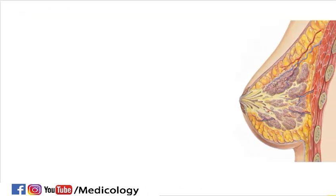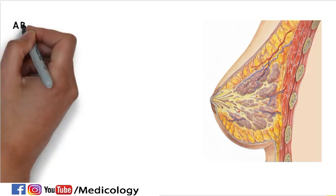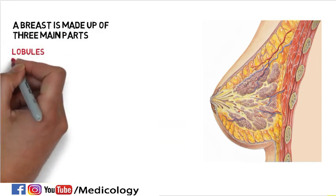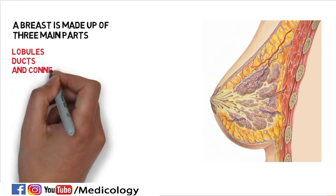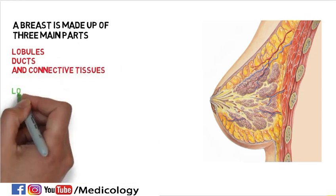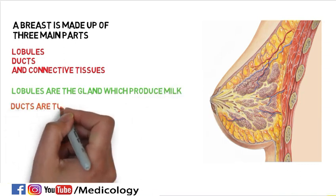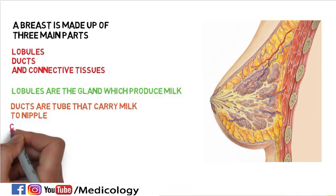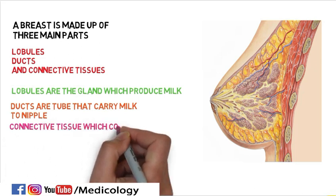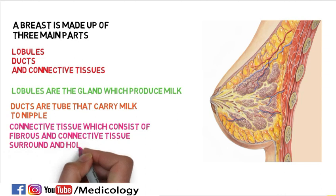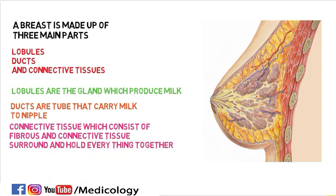A breast is made up of three main parts: lobules, ducts, and connective tissue. Lobules are the glands which produce milk. Ducts are tubes that carry milk to the nipple. Connective tissue, which consists of fibrous and fatty tissue, surrounds and holds everything together.